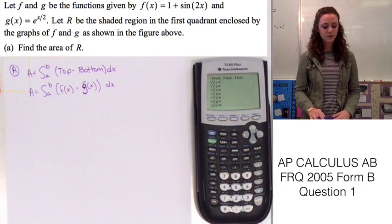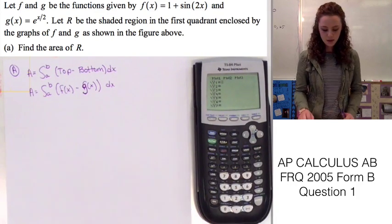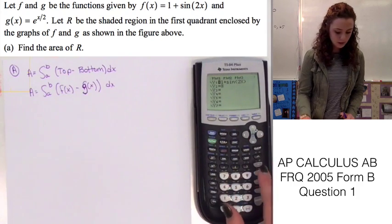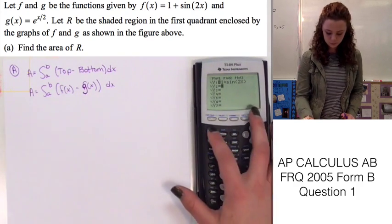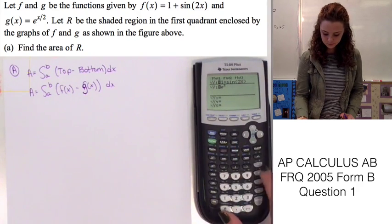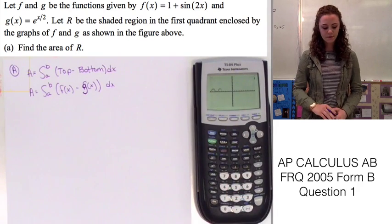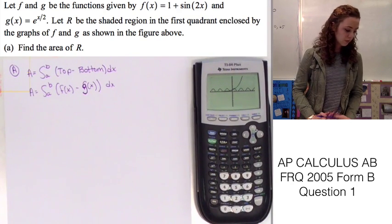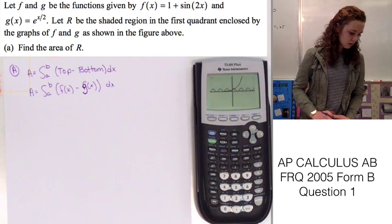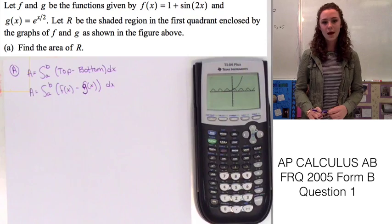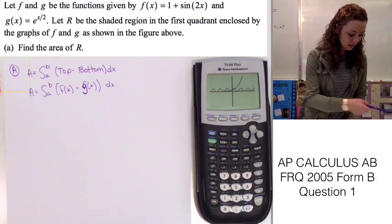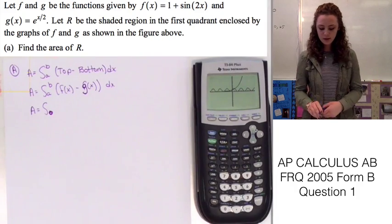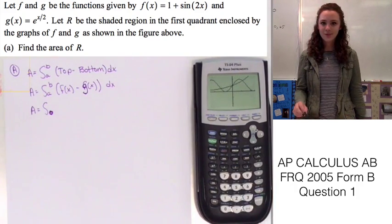Let's put these functions into our calculator in order to find the limits a and b. Y1 will be f of x, which is 1 plus sine of 2x, and y2 will be e to the x over 2. We know the lower limit a is at 0 because both functions cross through the y-axis, which we can confirm just by looking at the graph. So a equals 0. The graph is pretty zoomed out, so let's zoom in and find our upper limit b.